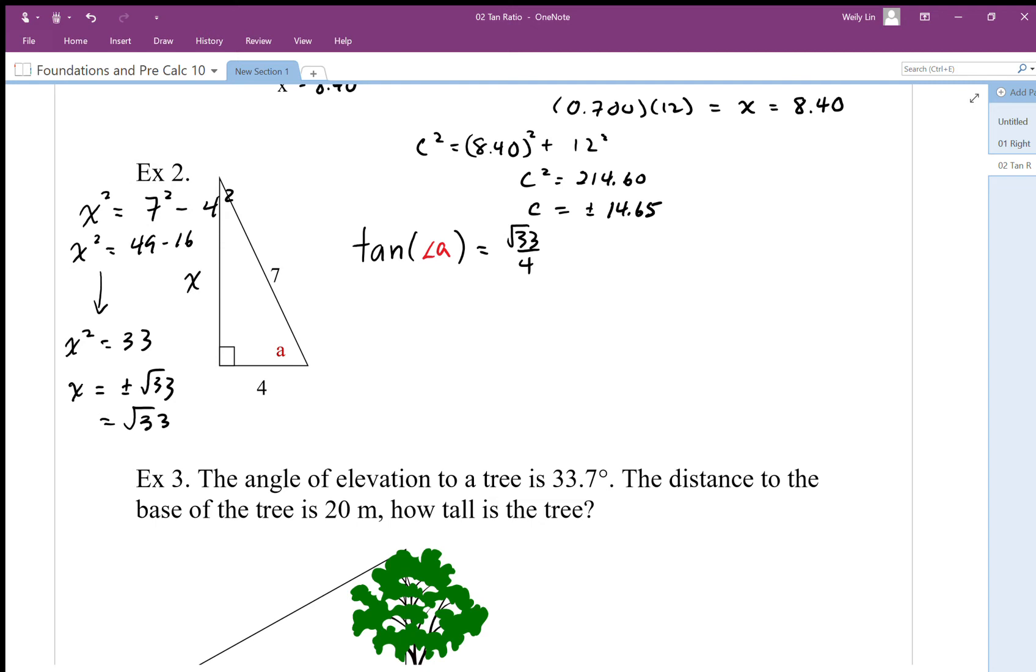Now the problem is if I use tan I'm going to calculate the ratio, so I can't use tan to solve this. I have to do the opposite of tan. So here this is again a situation where I have ratio to angle. I need to use my input is my ratio root 33 over 4 and my output then is going to be my angle.